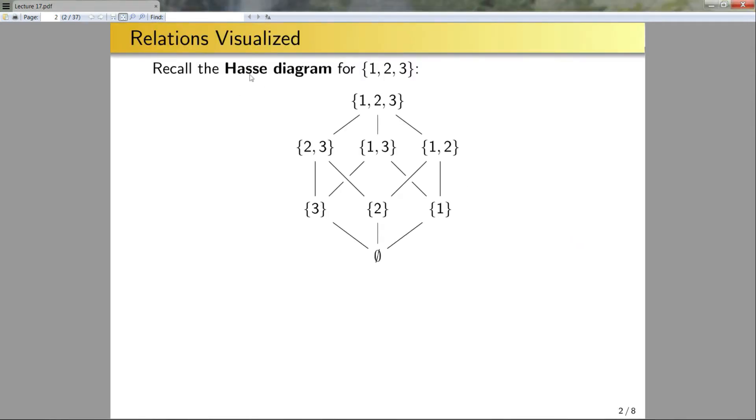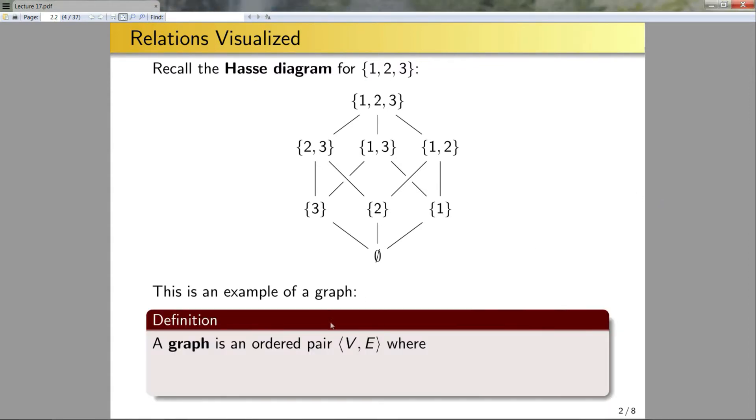Recall that we have this Hasse diagram for the set {1, 2, 3, 4}. This is called a graph. So what is a graph? A graph is an ordered pair (V, E) where V and E are sets. The elements in V are called nodes or vertices and the elements of E are called edges.